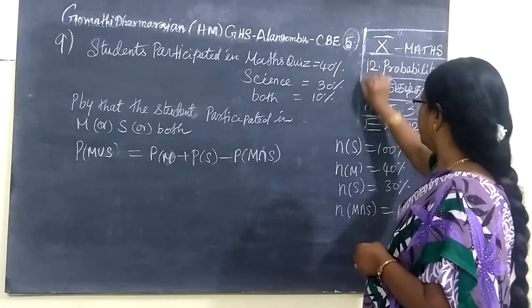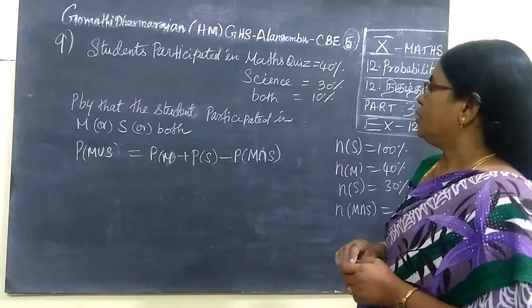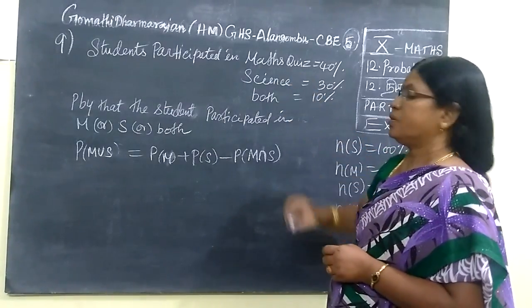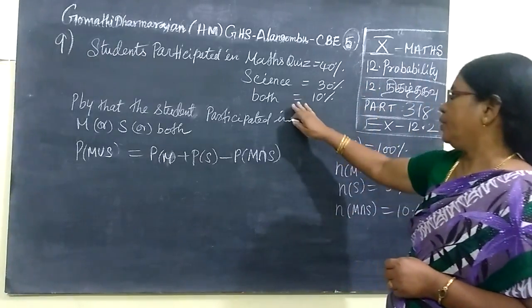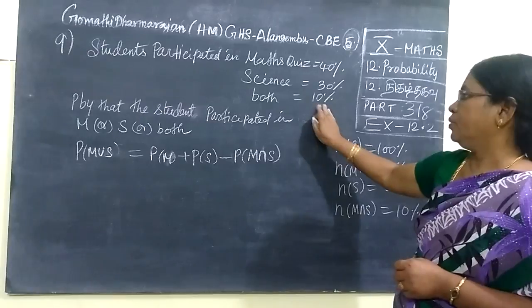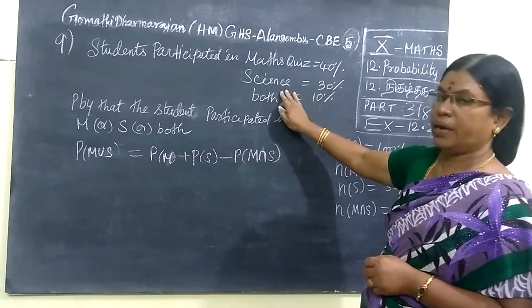So next we see 318 students participated in math quiz 40%, science quiz 30%, both 10%. That means both - they participated in math as well as science.